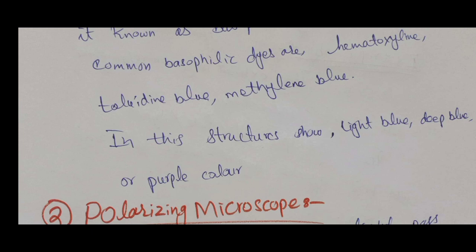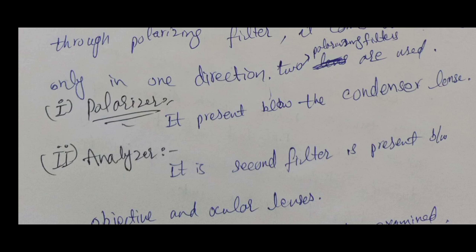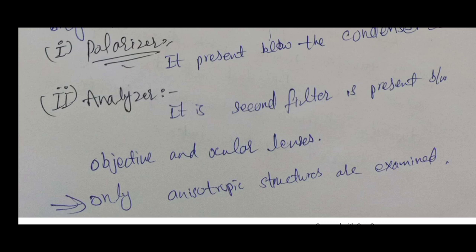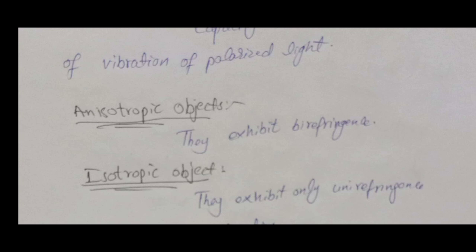The second type of light microscope is the polarizing microscope. In this microscope, the light comes out vibrating in one direction. There are two polarizing filters: the polarizer, located below the condenser lens, and the analyzer, located between the objective lens and the ocular lens. Only anisotropic structures can be examined by the polarizing microscope. Anisotropic structures show birefringence or double refraction — the capacity to rotate the direction of vibration of polarized light — while isotropic objects show only unirefringence or one-directional reflection.